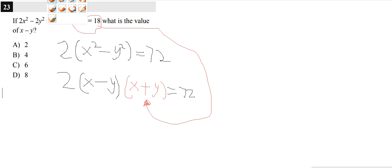And if x plus y has to be equal to 18, that means you have 2 times 18 multiplied by x minus y is equal to 72.